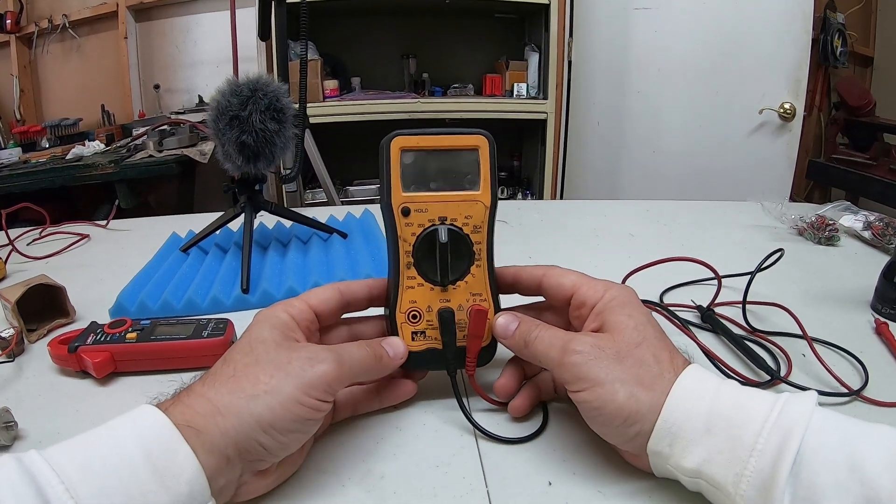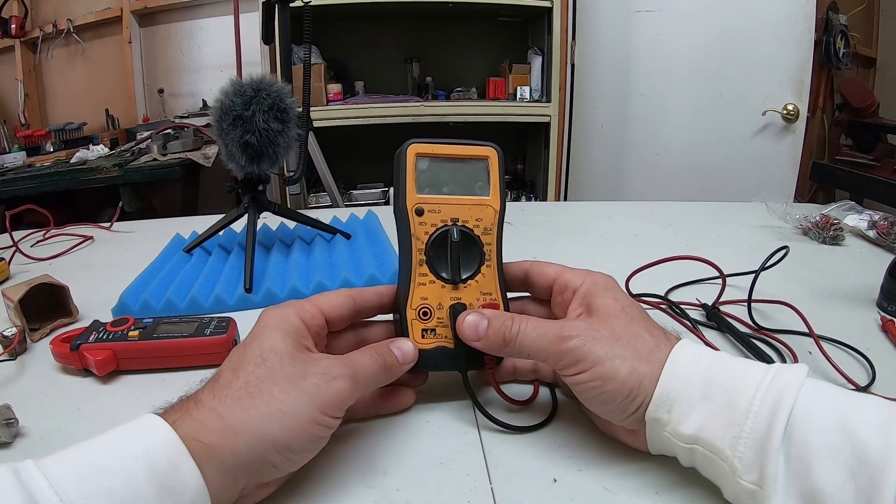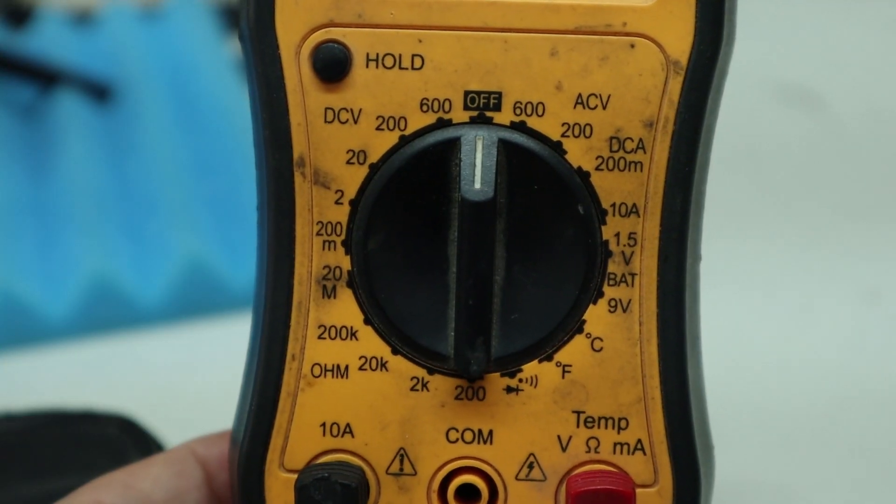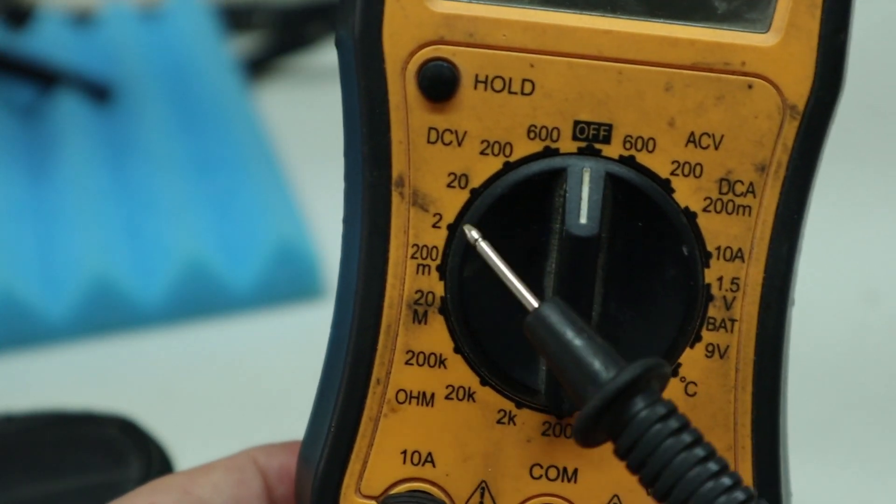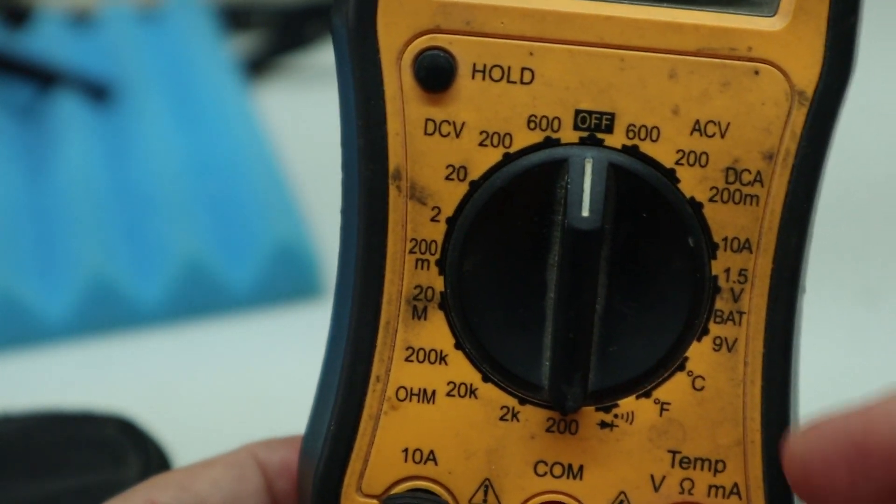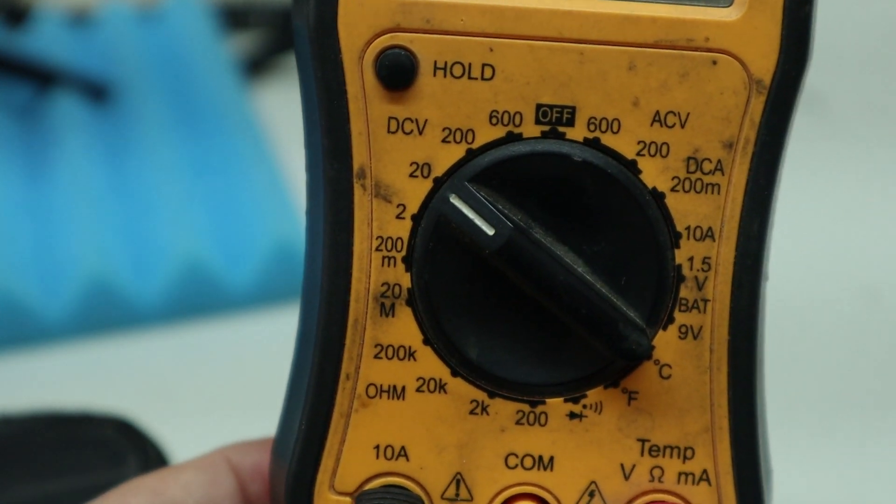This is the multimeter we'll be using today. For voltage we look over here on the left side, it says DC voltage. All batteries are DC, so these markings 220, 200, you want to go just slightly above what you think your voltage is going to be.